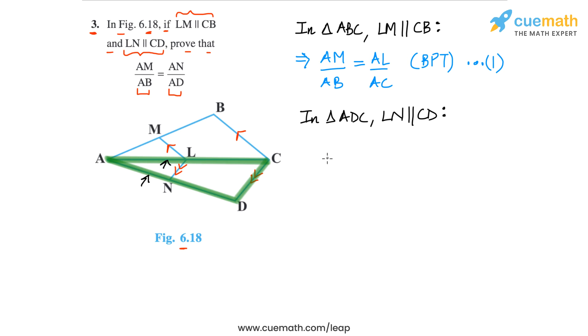Correct. So now, if we apply the BPT, we will get AN by AD is equal to AL by AC. Again, the reason is basic proportionality theorem.